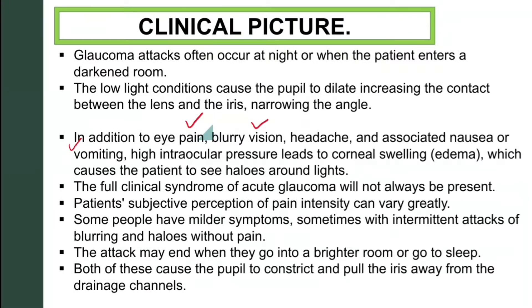There are also pharmacological drugs which cause mydriasis, such as systemic psychotropics — these can also trigger acute angle closure glaucoma. The glaucoma attack often occurs at night or when the patient enters a darkened room. Low light conditions cause the pupil to dilate, increasing the contact between the lens and the iris, thus narrowing the angle.